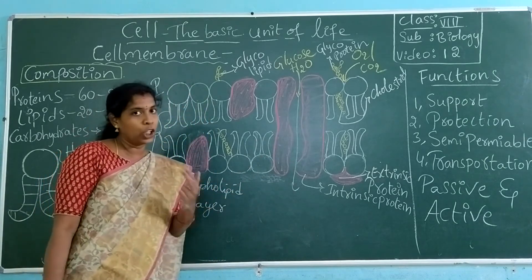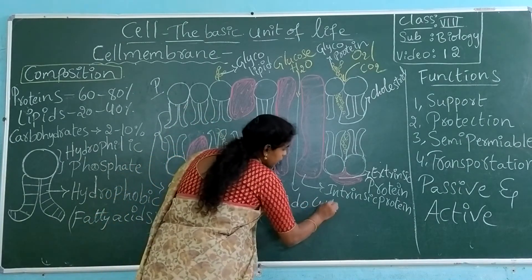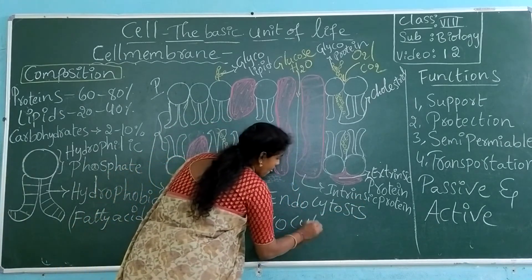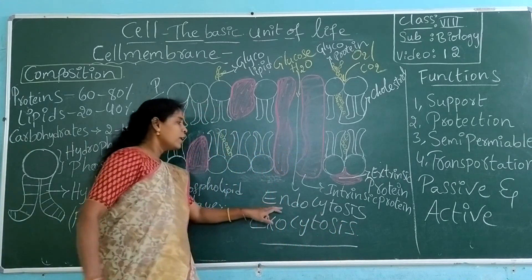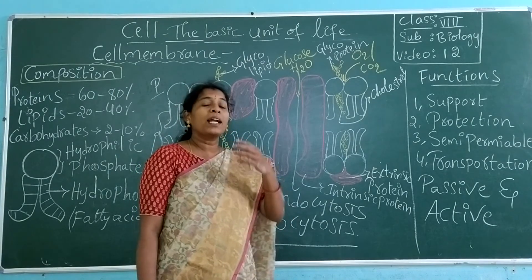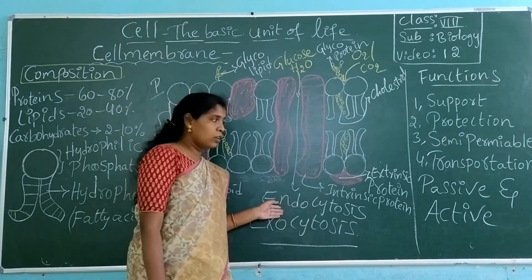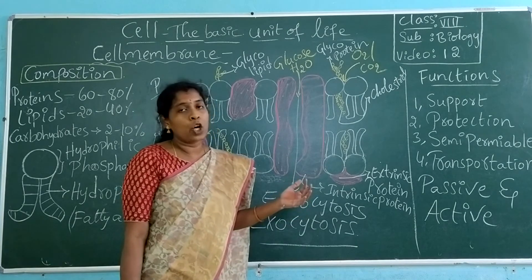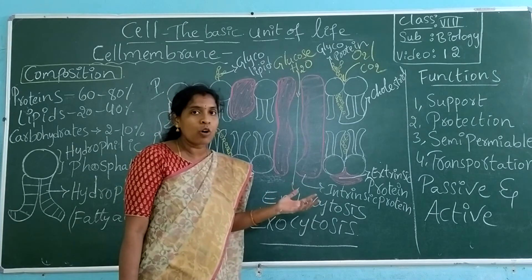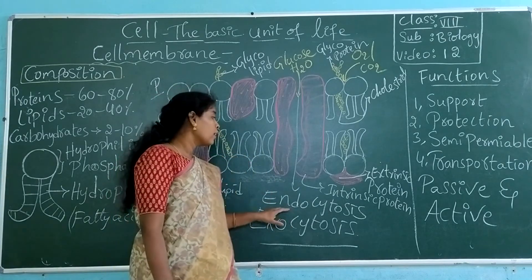Based on direction, transportation has been divided into two more types. One is endocytosis — for example, when you take food or water, the material is going inside through the cell membrane. This is known as endocytosis. Endocytosis is also known as phagocytosis or pinocytosis. Phagocytosis is taking solid food; pinocytosis is taking liquid food. The intake of material into the cell is known as endocytosis.